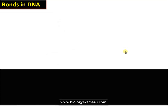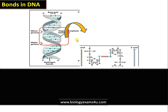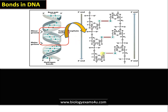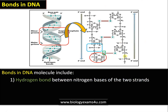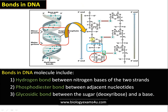Now moving to bonds in DNA. This is the double helical structure of DNA. Zooming in to the chemical nature of the strand: the first bond is the phosphodiester bond that connects two nucleotides, the building blocks of DNA. The second is the hydrogen bond that connects the two strands. The third is the glycosidic bond that connects the sugar residue and the nitrogenous base within a nucleotide.